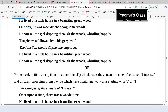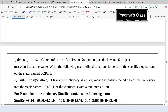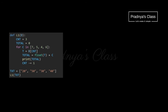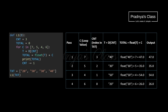Moving ahead, question 31 also asks us to predict the output. Use a dry run table. In this code one list is passed to the function, so d will be txt. Variables c and t are initialized to 3, and total is initialized to 0. The for loop iterates with c taking individual values from the list.